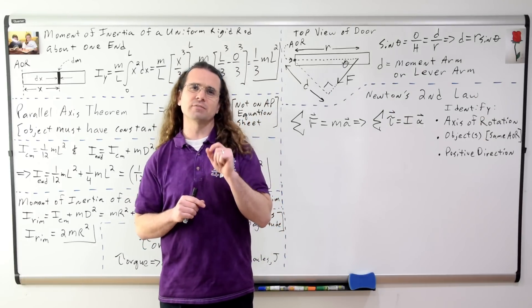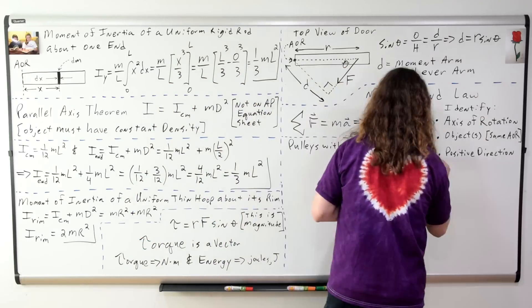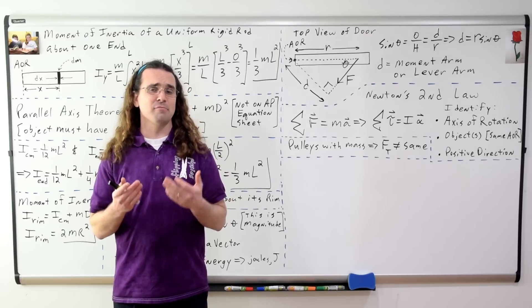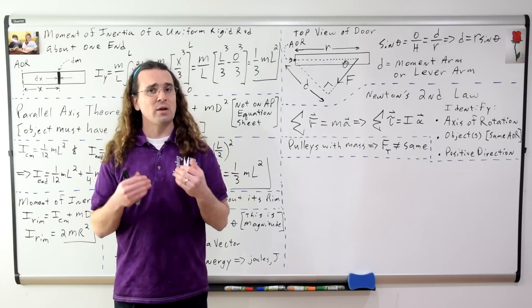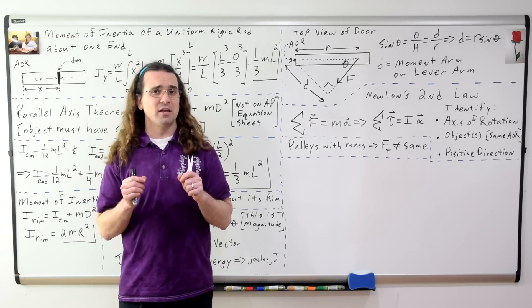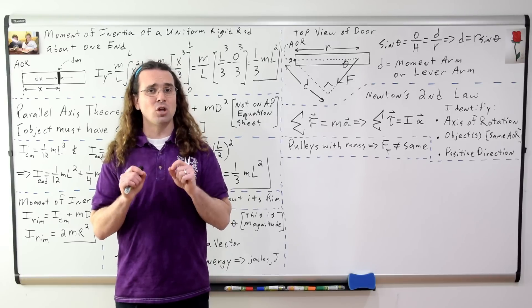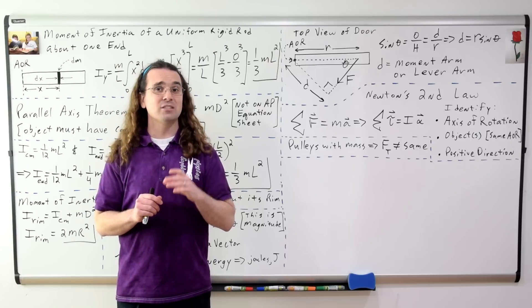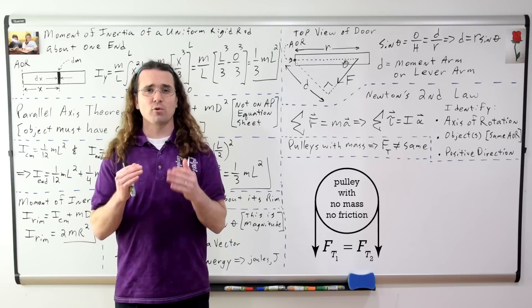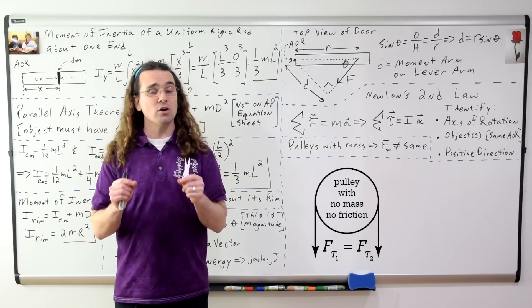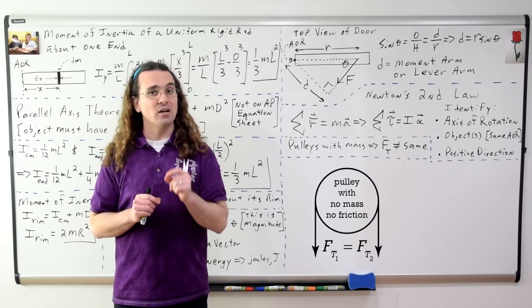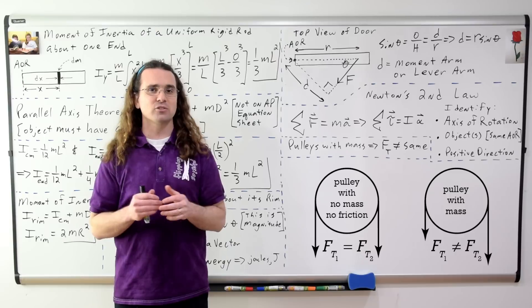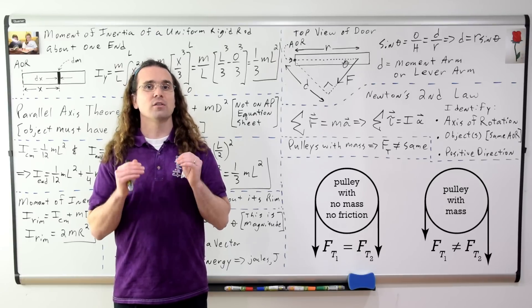Now that we have defined moment of inertia, pulleys can have mass. And when pulleys have mass, the force of tension on either side of a pulley is no longer the same. When a pulley is massless and frictionless, the forces of tension on either side are the same. However, when a pulley does have mass, those forces of tension on either side are no longer the same.